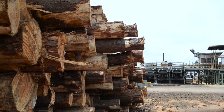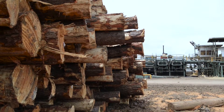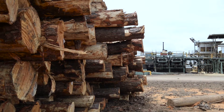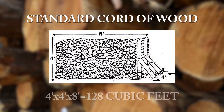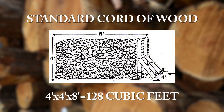Historically, the volume of pulpwood was measured in cords. A standard cord equals 128 cubic feet and is defined as the volume of wood found in a stack of wood that is four feet high by four feet wide and eight feet long.